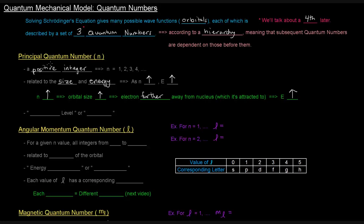The principal quantum number — n equals 1 or n equals 2, for example — can also be referred to as energy levels: the first energy level, the second energy level, the third energy level. We can also think about them as shells: the first shell, second shell, third shell. So if you see those terms, that's what they're referring to.